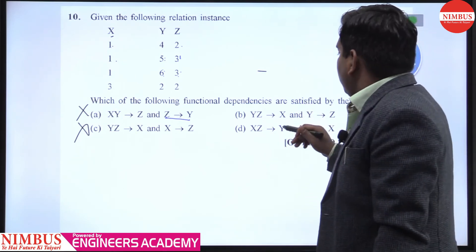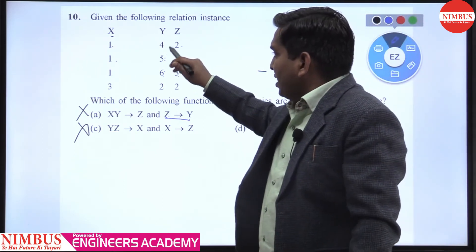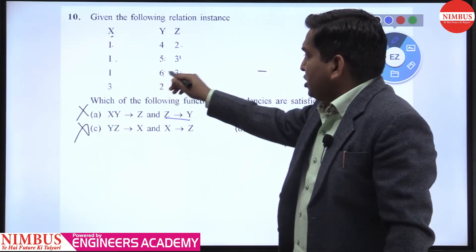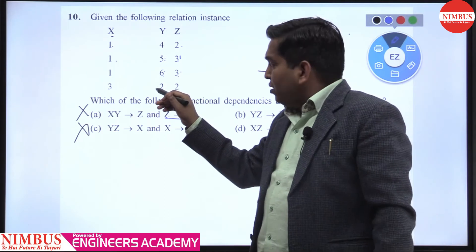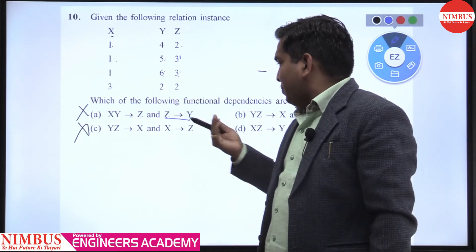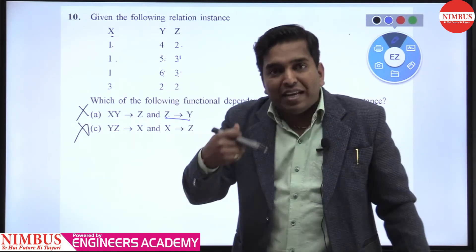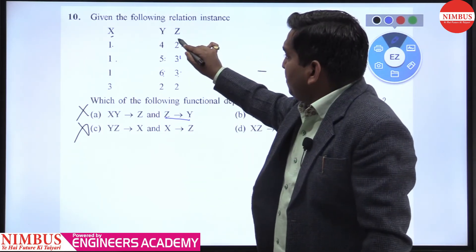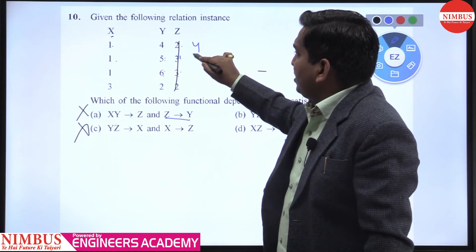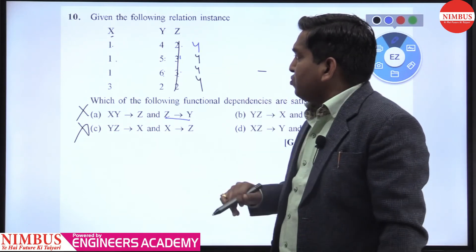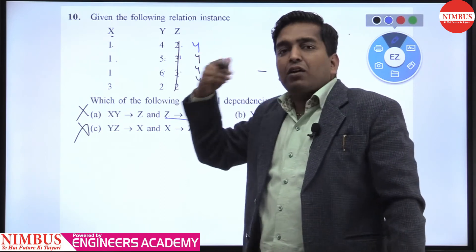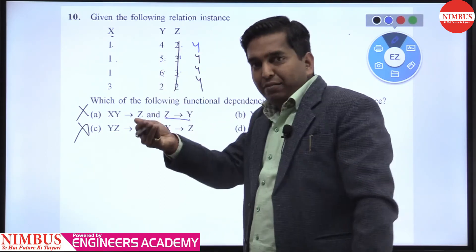Now we check in these two. First Y→Z: yes, 4 gives 2. Again whenever 4 repeats? No. 5 gives 3, 5 repeats? No. 6 gives 3, 6 repeats? No. 2 gives 2, 2 not repeated. You have to check whenever X value repeats in X→Y. It doesn't matter if I put only 4 in all of them, Y→Z will remain valid. Because in Y→Z, whenever X value repeats, corresponding Y value must be same.